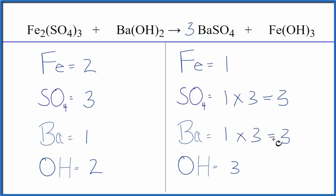And then one times three, we have three bariums. We can come over here, put a three in front of the barium hydroxide to balance the bariums. One times three, that gives us three of those.